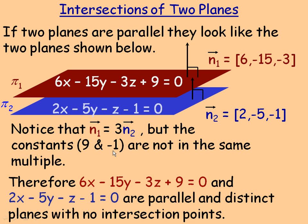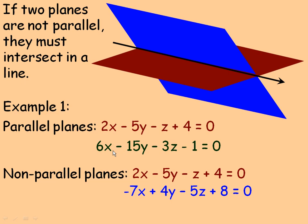Distinct means they do not share any common intersection points whatsoever — there's no point on both planes, just as there's no point on both the floor and ceiling of a room. If the planes are not parallel, then they have to intersect in a line somewhere. In non-parallel planes, the normals are not multiples of one another — for example, 2, negative 5, negative 1 is not a multiple of negative 7, 4, negative 5 — so those two planes would intersect in a line.